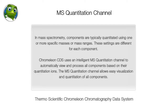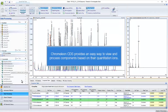In mass spectrometry, components are typically quantitated using one or more specific masses or mass ranges. These settings are different for each component. Chromelion CDS uses an intelligent MS quantitation channel to automatically view and process all components based on their quantitation ions. The MS quantitation channel allows easy visualization and quantitation of all components.